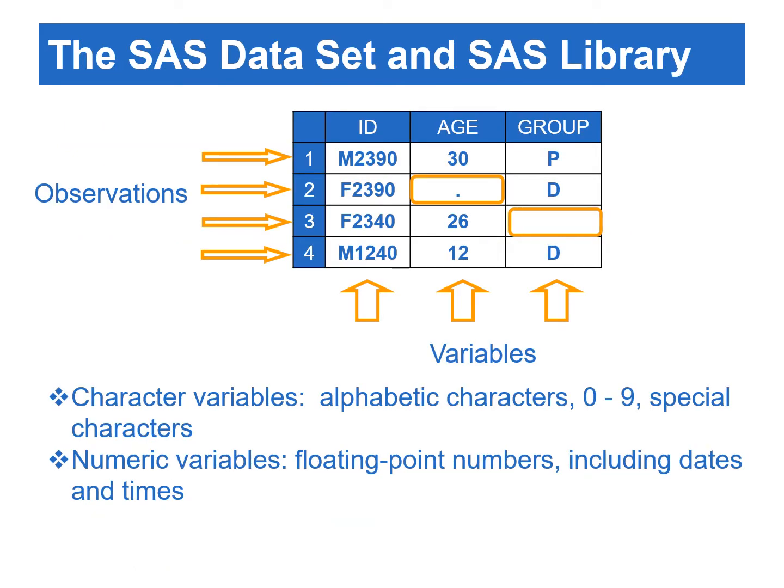A SAS data file contains data and the descriptor information. In SAS, there are two types of variables: character and numeric. Character variables can contain alphanumeric values or special characters. The missing values are represented as blanks. Numeric variables can contain floating-point numbers. Periods are used to represent missing numeric values. Furthermore, date and time values are also considered numeric values.